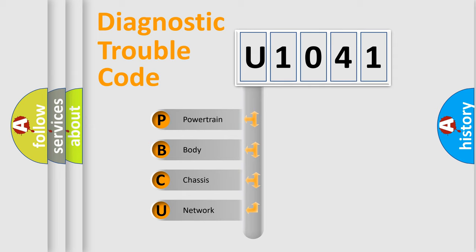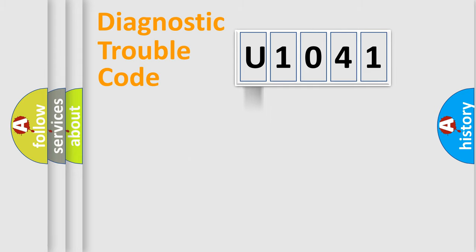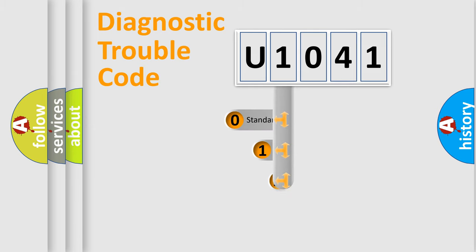We divide the electric system of an automobile into four basic units: Powertrain, Body, Chassis, and Network. This distribution is defined in the first character of the code.